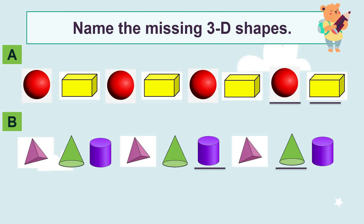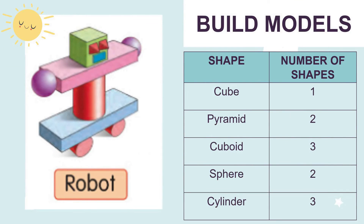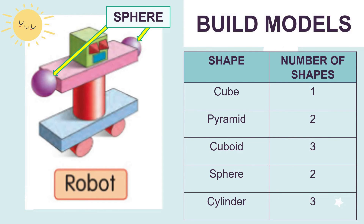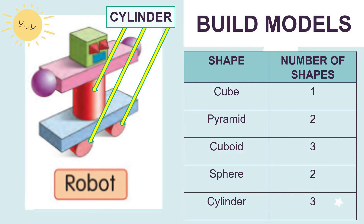Dear pupils, you can make beautiful patterns using 3D shapes. Now let's learn to build models using 3D shapes. As you can see, this robot is made of many 3D shapes: 1 cube, 2 pyramids, 3 cuboids, 2 spheres, and 3 cylinders.